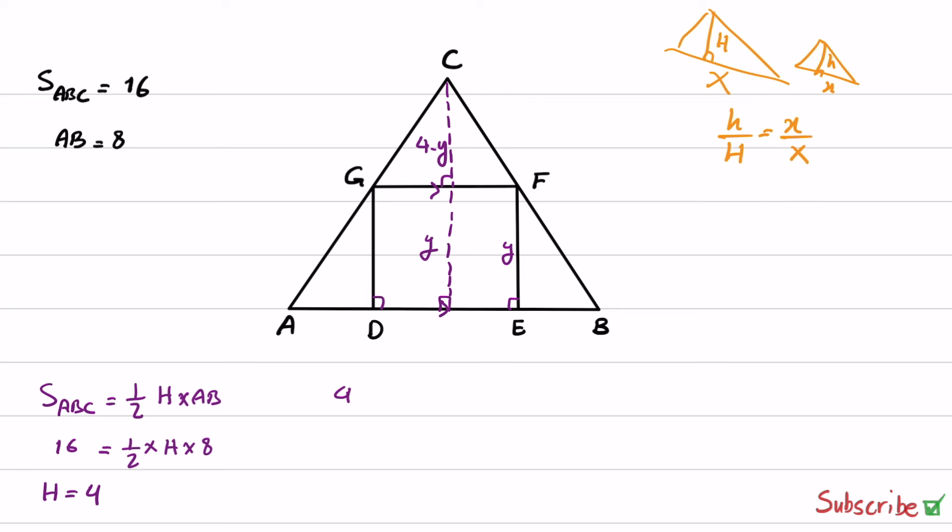We can write (4 minus Y) over the height of triangle ABC, which is equal to 4, equals to this side to this side. GF is again Y, because it is the side of the square, and AB is equal to 8 as given in the problem.